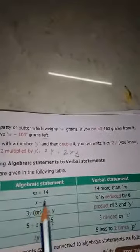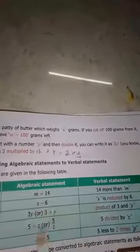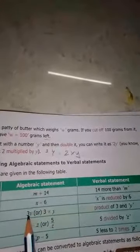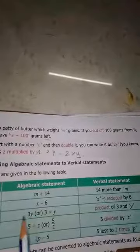Next, x minus 6 means 'x is reduced by 6'. 3y is 'product of 3 and y' - that's multiplication. 5 divided by z - that's the statement.